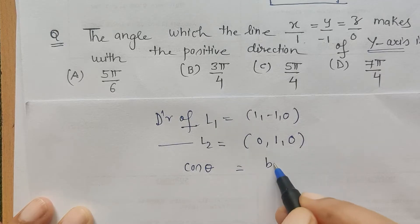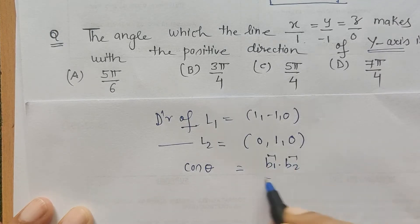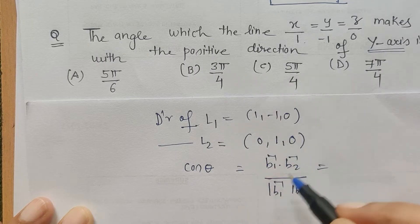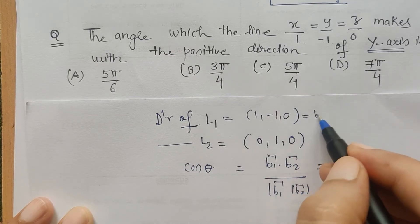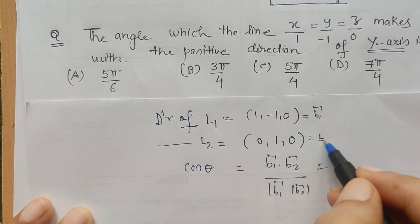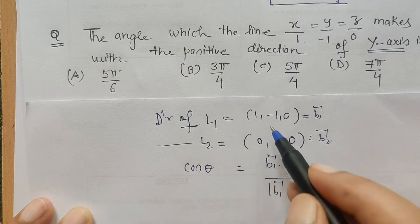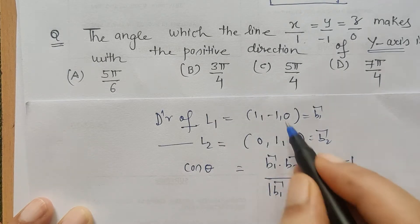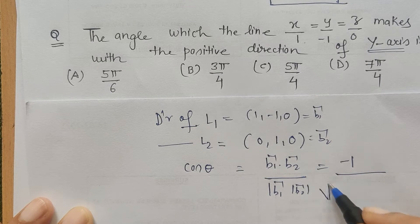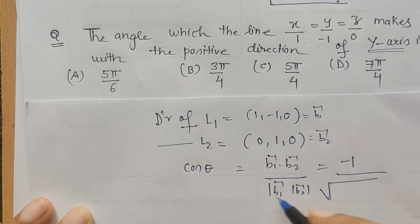Here b1 dot b2 are nothing but this direction ratio of the first and second line. So the dot product of this: this is 0, and this gets minus 1, and this is again 0. And the mod of individual direction ratio is sum of the square of the individual coordinates.